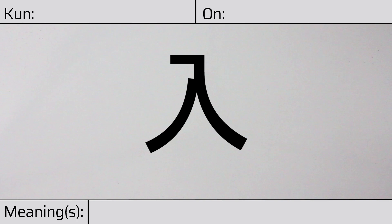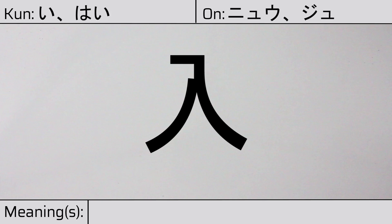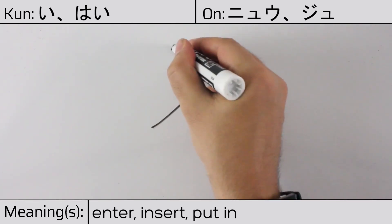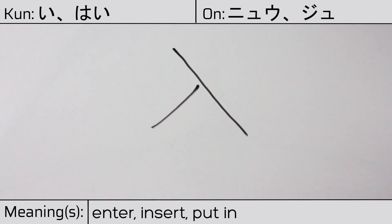Welcome to this lesson on Japanese kanji. Today, we'll be discussing this character. This kanji has kunyomi or Japanese readings of i or hai, and it has onyomi or Chinese readings of niu or jiu. This character has the meanings enter, insert, or put in. Here is the stroke order. This character has no radicals.